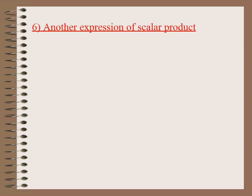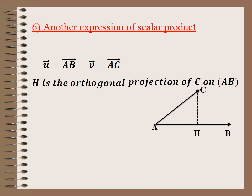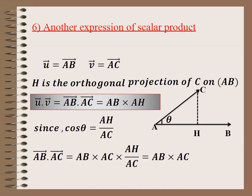Another expression of the scalar product: if H is the orthogonal projection of the first vector onto the second vector, then u·v = AB·AC = AB × AH, since cos θ = AH/AC. So AB·AC = AB × AC × cos θ = AB × AC × (AH/AC) = AB × AH.